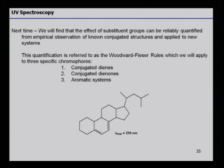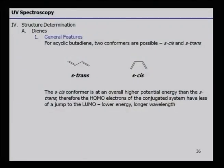For example, a large structure containing a diene has an observed lambda max of 239 nm. Acyclic butadiene can exist as cis and trans conformers. The cis conformer is at an overall higher potential energy than the trans isomer. Therefore, the HOMO electrons of the conjugated system have less energy to jump to the LUMO — lower energy, longer wavelengths. The ease of transition from one orbital to another is greater in the trans conformer.